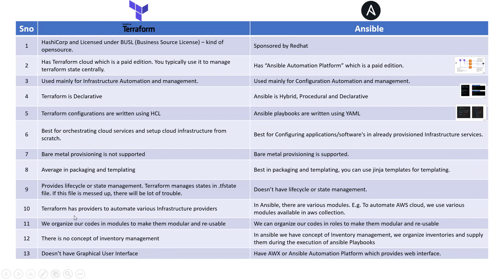Regarding providers and modules: Terraform uses providers to automate various infrastructure platforms. To automate AWS infrastructure, you provide AWS provider information, which downloads the required binaries to interact with cloud APIs. In Ansible, we have modules — to interact with AWS you install the AWS collection and call those modules in your Ansible code to automate AWS-related tasks.